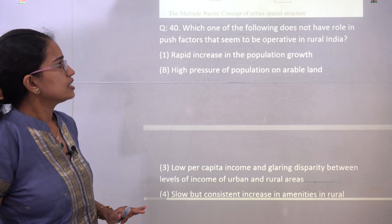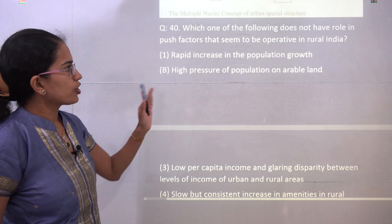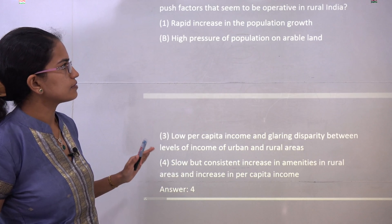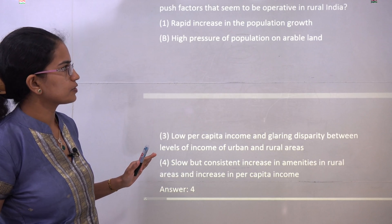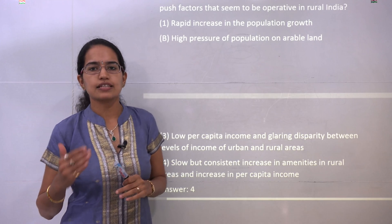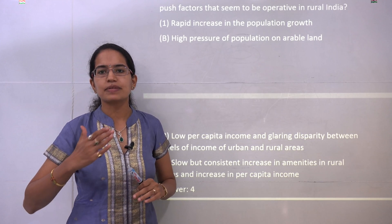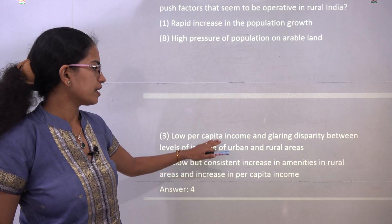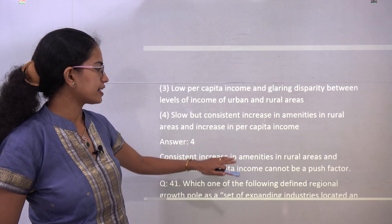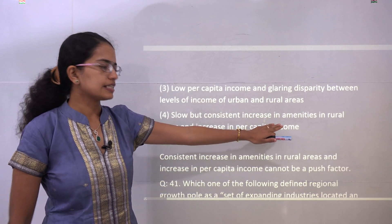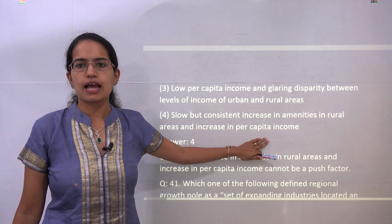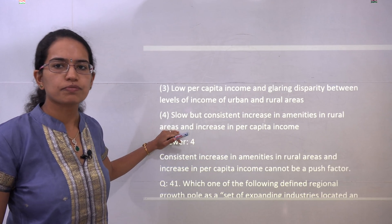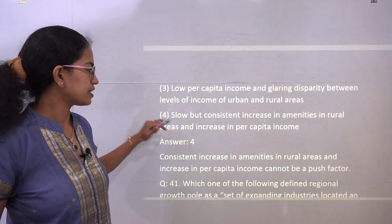The next question asks which of the following does not have a role in the push factors operative in rural areas. Push factors are factors that repel people to move out; however, providing good facilities and higher per capita income cannot be a push factor, so option 4 would be the incorrect choice and therefore the answer.